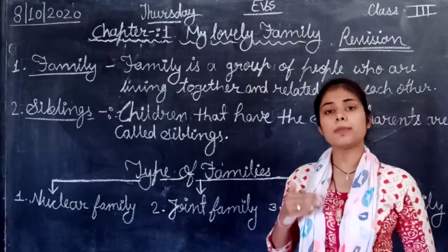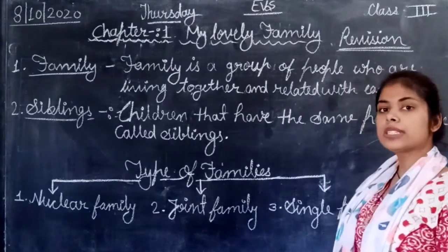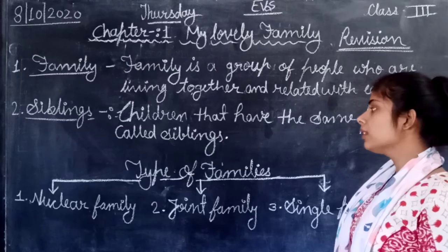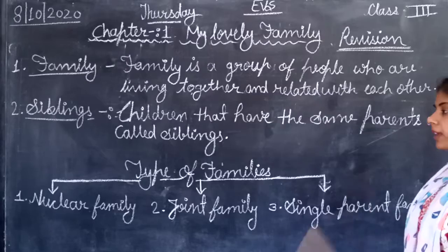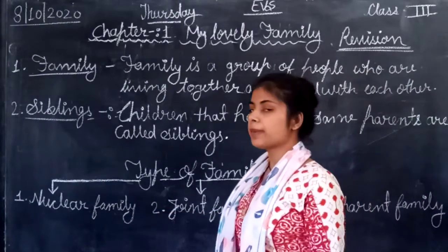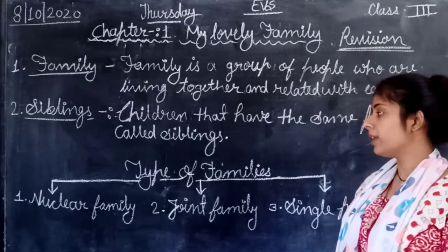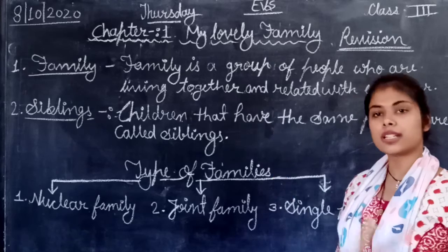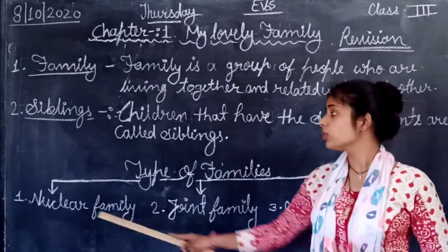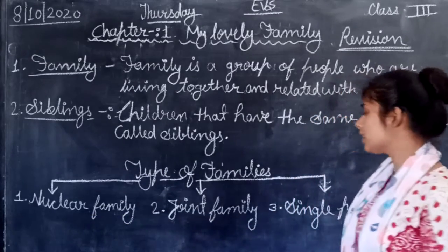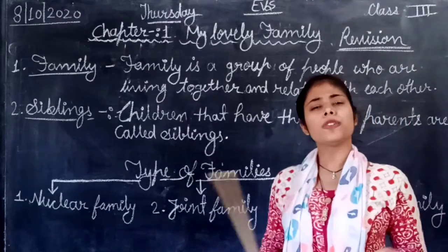What are siblings? Now, types of families — how do we talk about the types of families? There are 3 types: nuclear family, joint family, single parent family. First of all, we have nuclear family. Nuclear family is a small family — parents and children.